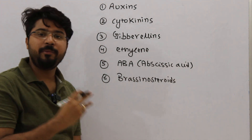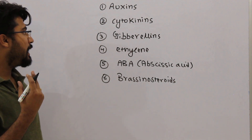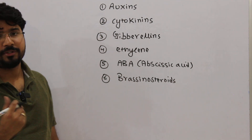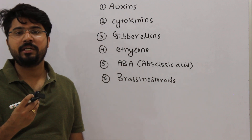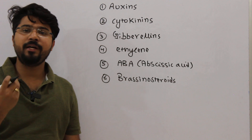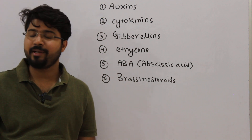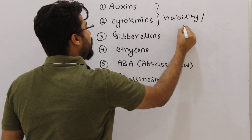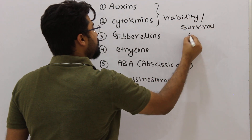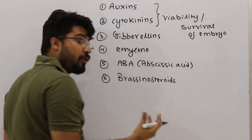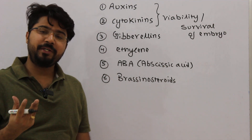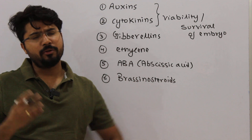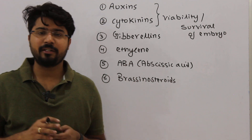These are the six main PGRs listed initially. An important question that can be asked in PCSR and interviews is: why do auxins and cytokinins form a unique class compared to all other PGRs? Auxins and cytokinins are extremely crucial for the viability or survival of the embryo. If there is any problem associated with the biosynthesis or signaling of auxins and cytokinins, it can ultimately result in a problem in the survival or viability of the embryo.